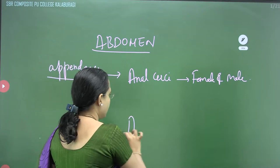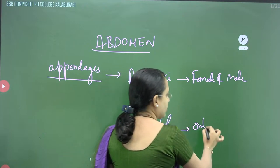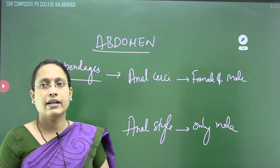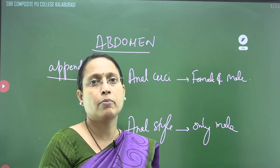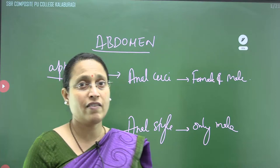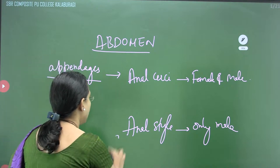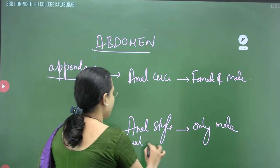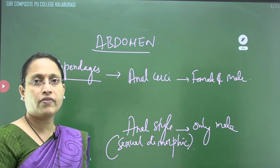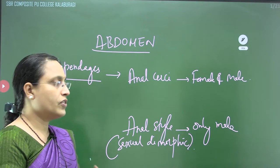One more appendage is present, called the anal style. That is present only in the male. Since it is present only in the male, it helps differentiate between male and female — it is a morphological, external feature. It becomes a sexual dimorphic character and helps to differentiate the male cockroach from the female cockroach by visual external observation.